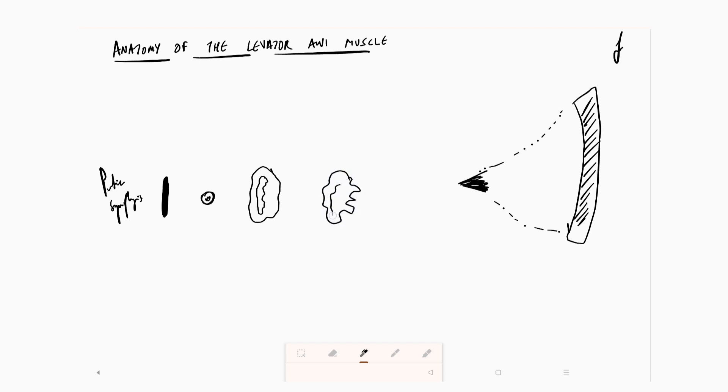Now when we talk of the levator plate and the levator anii muscle, we must also understand that the pelvis has a very strong side wall. So let me just draw the side wall on each side. This is where the pelvis is going to have a very strong side wall, and you have this huge muscle which is actually originating and dipping down inside the pelvis.